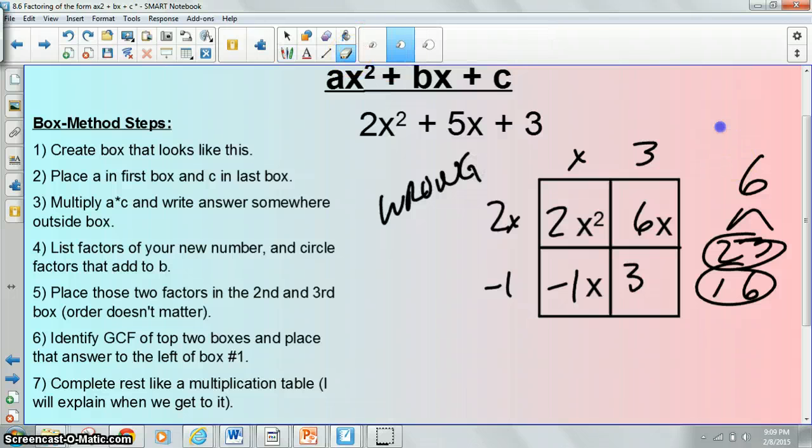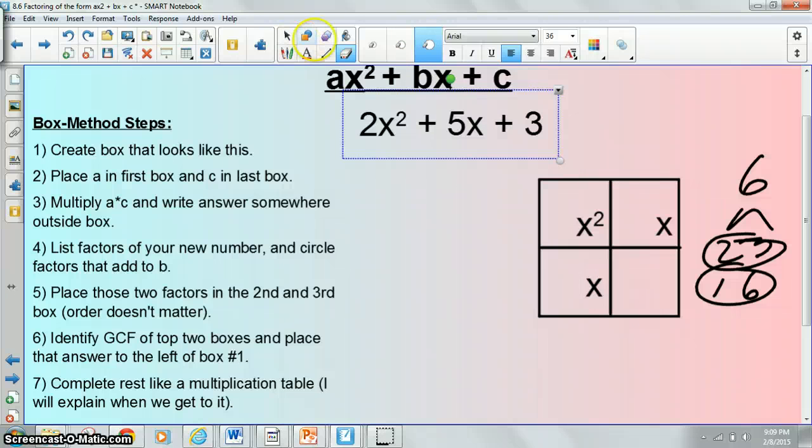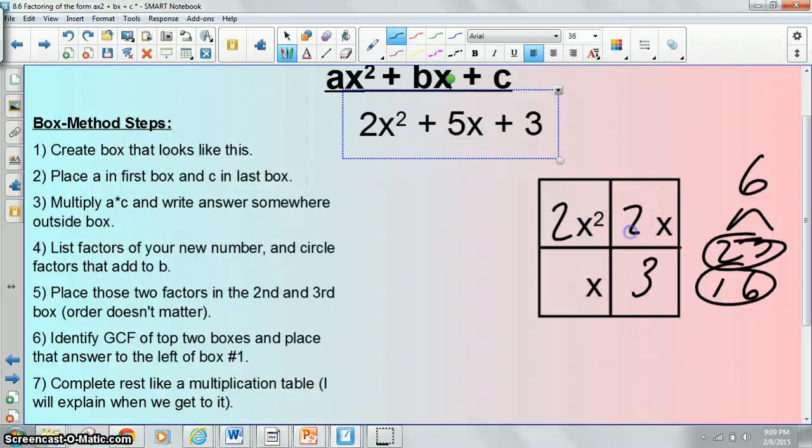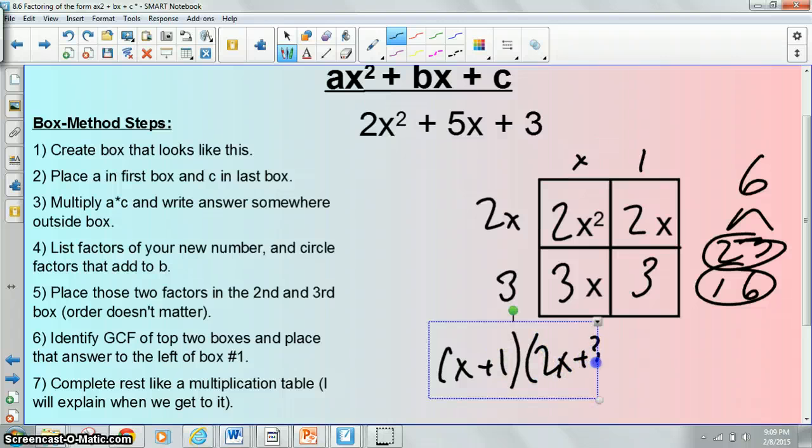Let's go ahead and try this one more time. 2x, 3, if I chose 2x and 3x that would be the right answer. I'll get 2x here, x there, 3 there, 1 there, 1 times 3 is 3. So my answer is x plus 1 and 2x plus 3.